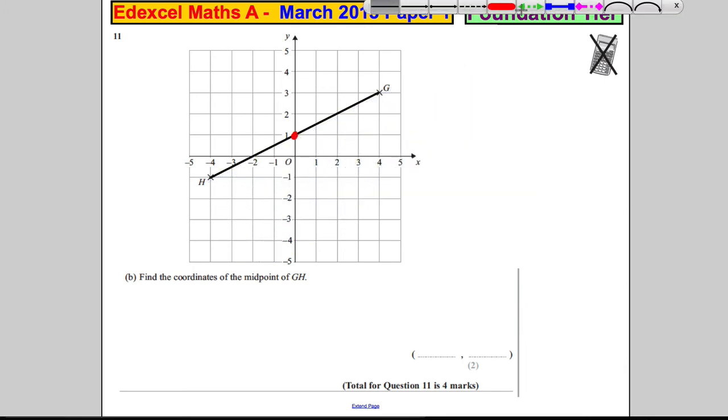I've gone along from negative 4 to 4, that's 8. So if I go halfway along, I'll go along just 4.